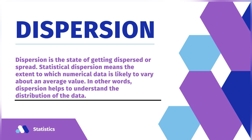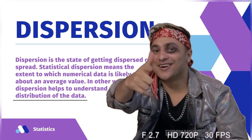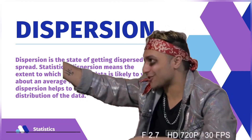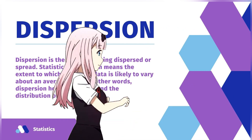Dispersion is the state of getting dispersed or spread. Statistical dispersion means the extent to which numerical data is likely to vary about an average value. In other words, dispersion helps to understand the distribution of the data.